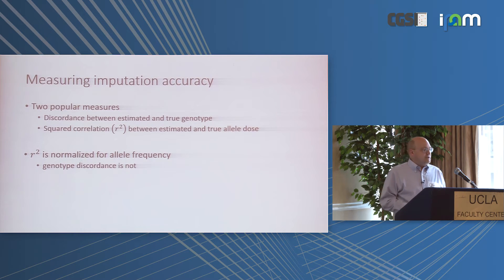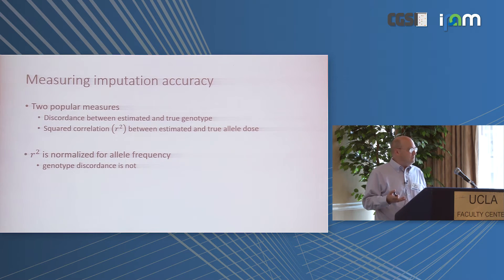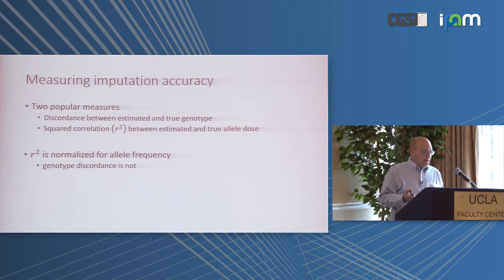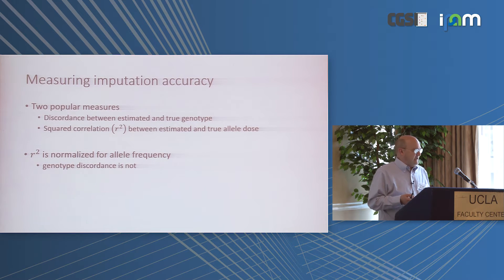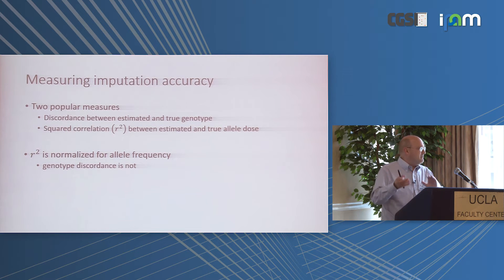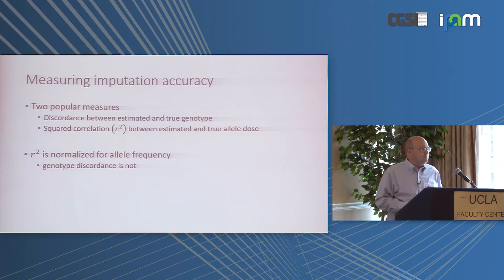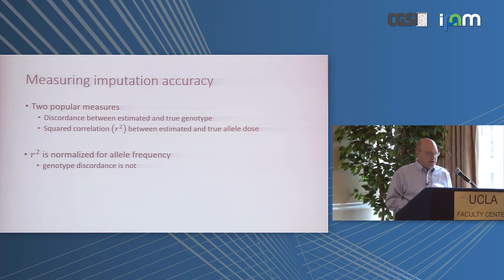There's more uncertainty in imputation, so you need a way of measuring it. There are two approaches: the most obvious is genotype discordance, and the less obvious is the correlation in allele dosage. The Michigan group and the Oxford group devised similar methods; Michigan devised the correlation metric I'll discuss here.